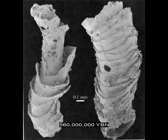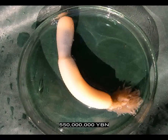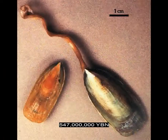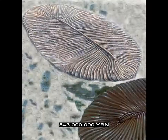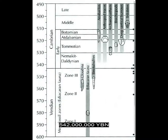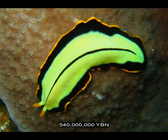Ecdysozoa roundworms. Platyzoa rotifers. Trochozoa phoronids, brachiopods, and entoprocts. Segmentation evolves. Trochozoa bryozoans. The Cambrian radiation, or Cambrian explosion — the rapid diversification of multicellular animals between 542 and 530 million years ago — results in the appearance of many of the major phyla of animals. An increase of animals with shells.